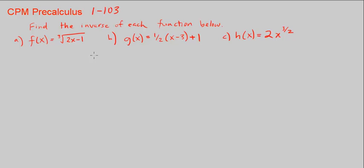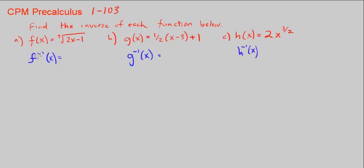Remember, the inverse is how we unwrap a function. So our inverse is going to be f⁻¹(x) for part a, g⁻¹(x) for part b, and h⁻¹(x) for part c. Those are the inverse functions of f, g, and h respectively.